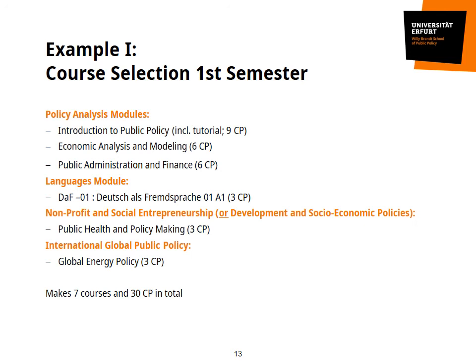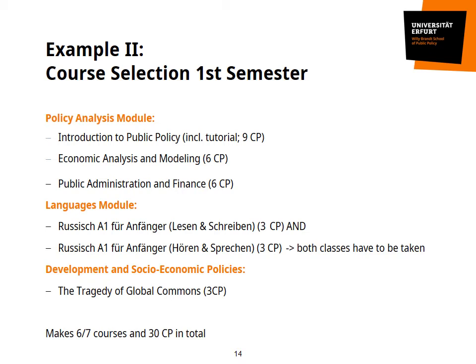As an illustration, this may be a possible course selection during your first term. Besides the mandatory classes, this student is taking the German course offered by Brandt School, and two specialization courses — one in the Nonprofit and Social Entrepreneurship specialization and one in International Global Public Policy. Altogether, these are seven courses. As a second example, another student takes a different language class, Basic Russian, which has two parts — literal and oral skills — that need to be taken in combination and are rewarded with six credit points. This selection is completed by one specialization course in Development and Socioeconomic Policies. Depending on whether you count the language class as one or two, this again makes six or seven courses and 30 credit points in total.